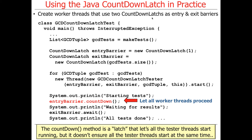This is a subtle issue. Once countDown is called — and remember it started with a count of one, now it's down to zero — anybody who comes along and awaits on this entry barrier can proceed. However, this is a latch, meaning all the tester threads don't all start at exactly the same time. They start whenever they individually reach the await call and find the count is zero. So one might start, then a few milliseconds later another starts. This is a subtle difference from cyclic barriers, as we'll see later.